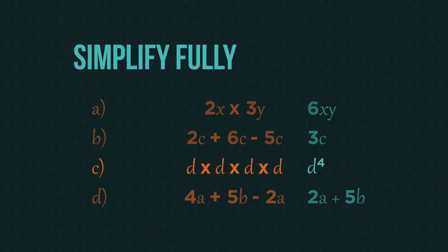And then, similar to the second question, we group the same letters together. But they must be the same letter. So, 4a subtract 2a is 2a.